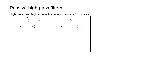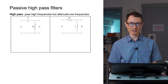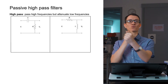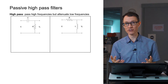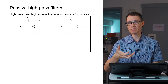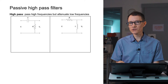Now we've looked at low-pass filters; I want to take a look at high-pass filters. How are they different? Here are two examples: one RC filter and one LR filter. They're very similar to the low-pass filters. The only difference is that in the RC filter the resistor and capacitor have swapped locations, and in the LR filter the inductor and resistor have also swapped locations. Swapping resistors and capacitors can convert a low-pass filter into a high-pass filter.